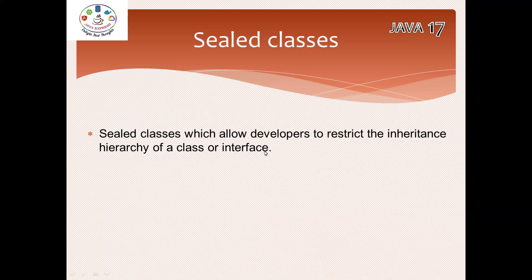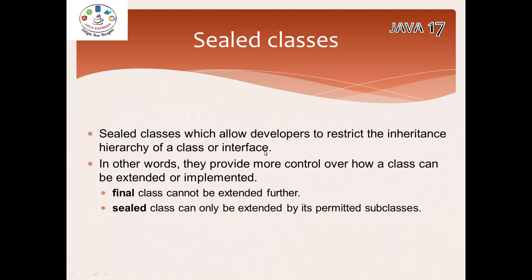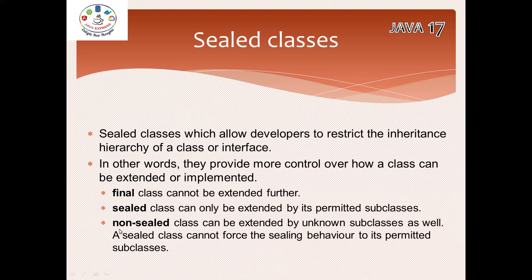In other words, sealed gives you more control over who can access or implement your class. When working with sealed classes, there are three keywords you need to know. One: final — a final class cannot be extended. Two: sealed — a sealed class can be extended only by permitted subclasses, defined using the permits keyword. Three: non-sealed — these classes can be extended by unknown subclasses as well.